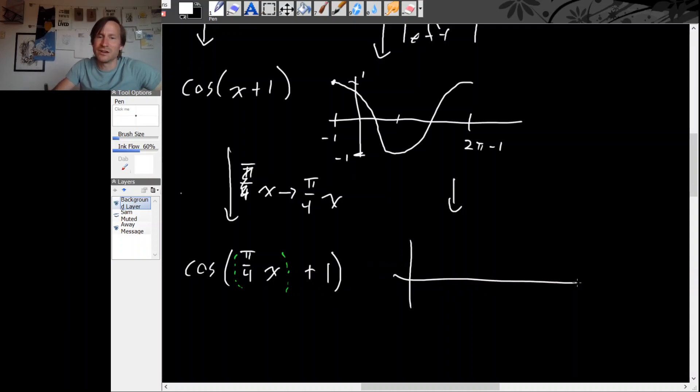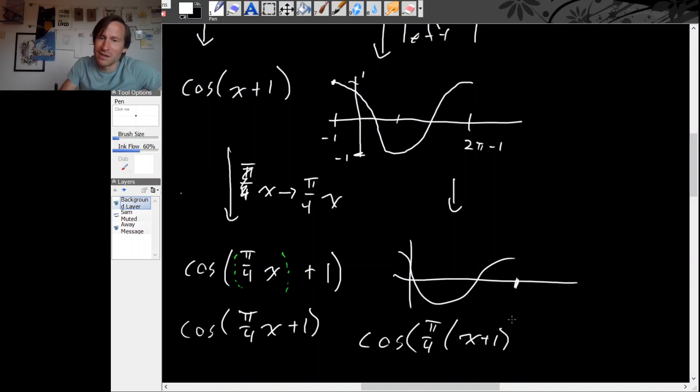And that has the effect of stretching the graph by some certain amount. But you can see the problem with doing it in this order is that we didn't get the function we were aiming for. What we got was cosine pi over 4 times x plus 1. But what we wanted was cosine of pi over 4 times x plus 1. And these two functions are not the same. And so depending on the order of operations that's inside your trig function, if you have more than one horizontal operation, you need to be extremely careful to respect the order so that you end up with the function that you wanted to get.